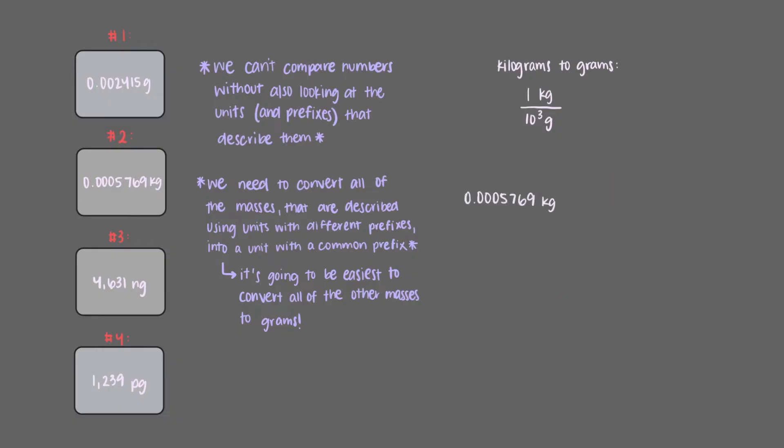We start with 0.0005769 kilograms, and we know that there are 1000 grams per 1 kilogram, so we'll write this conversion, making sure we set it up in a way that allows us to cancel our kilogram units. By putting grams on top and kilograms on the bottom, we can cancel out the kilogram units, and we are left with 0.5769 grams when we multiply.